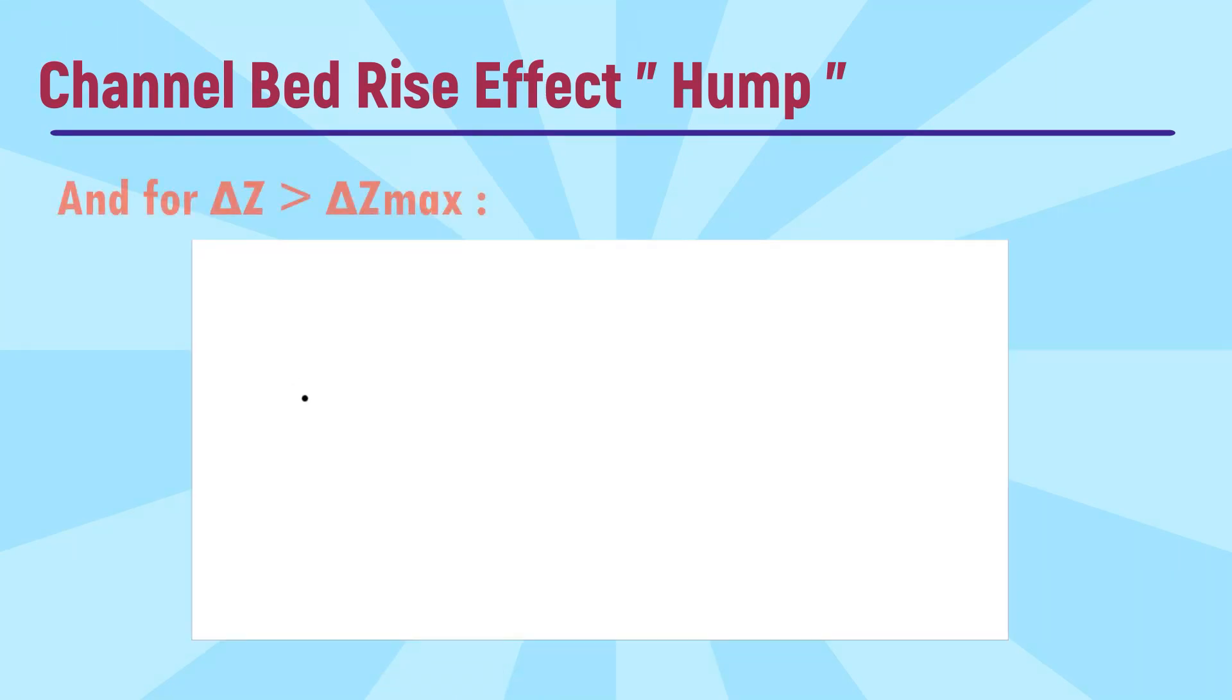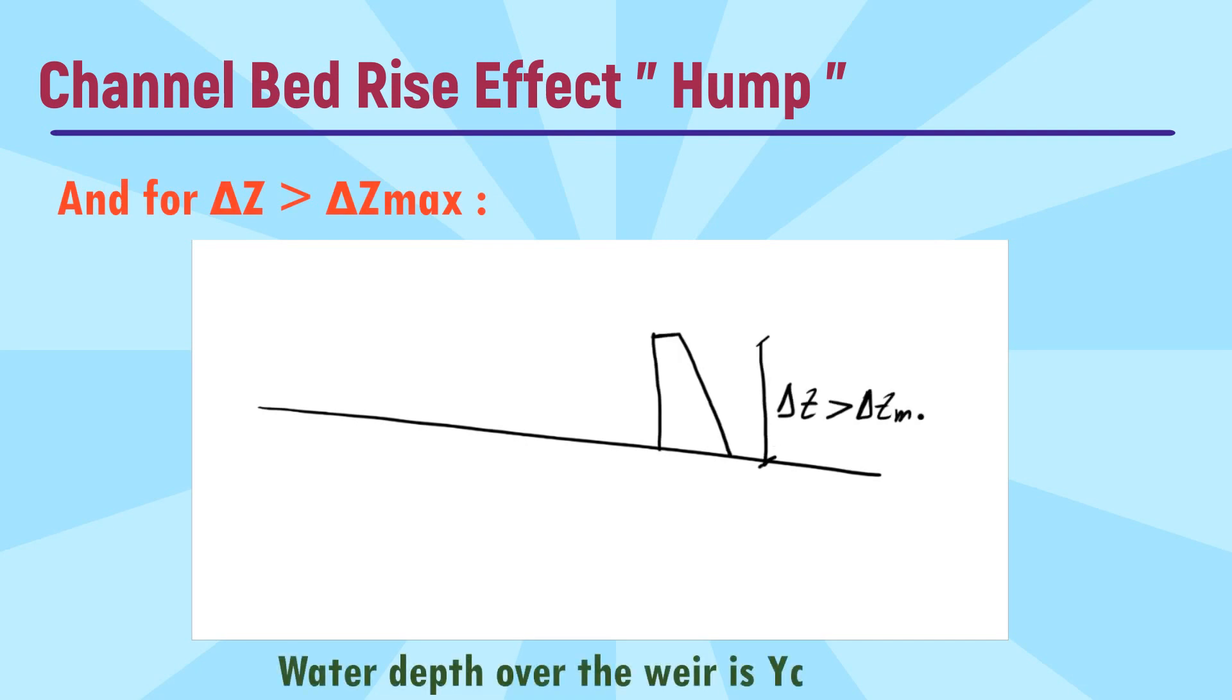Also for delta z larger than delta z maximum, the water depth over the weir will be the critical depth, yc.